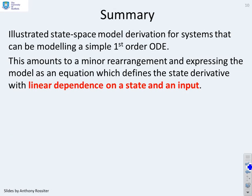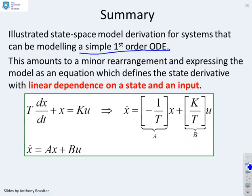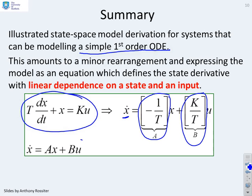So what have we done here? We've illustrated a state-space model derivation for systems that can be modelled by a simple first-order ODE. What this amounts to is a minor rearrangement and expressing the model as an equation which defines the state derivative with linear dependence on a state and an input. If you have a standard first-order model of this form, T dx/dt plus x equals Ku, I can rearrange that to write the derivative on its own. So x dot equals minus 1 over T times x plus K over T times u.